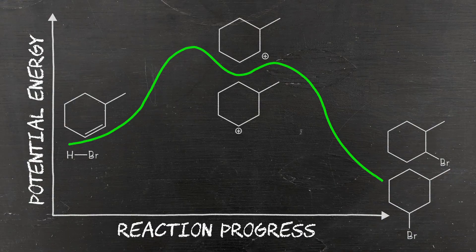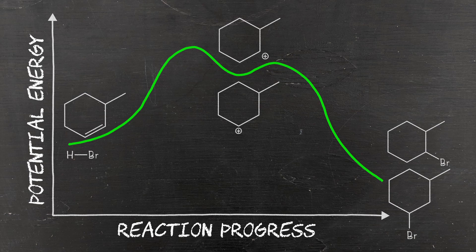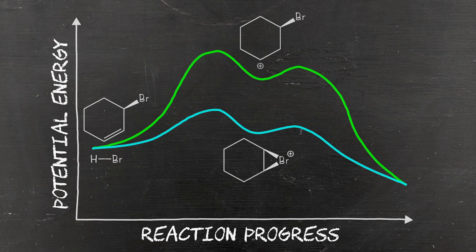Let's rationalize this further by looking at some reaction coordinate diagrams. In the case of the 3-methylcyclohexene, we said there was no real difference in the energy of either of those carbocations. As such, we would expect both reaction pathways to be followed in approximately equal amounts.